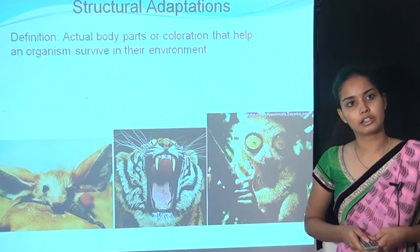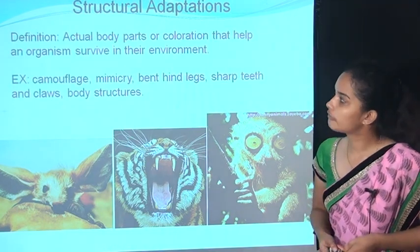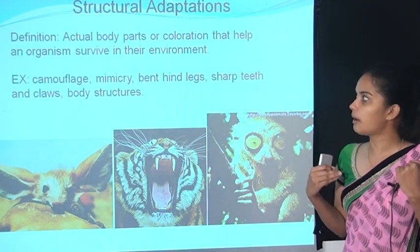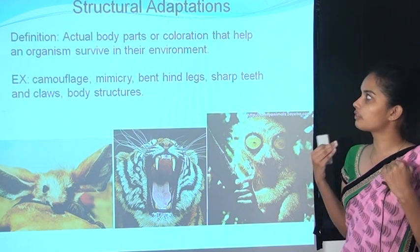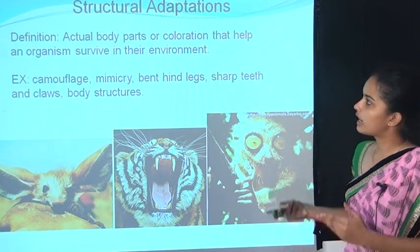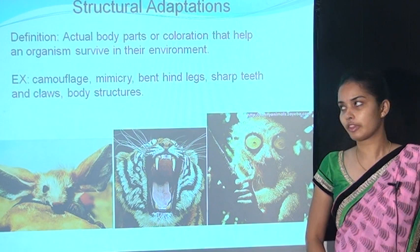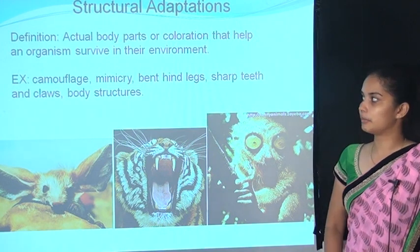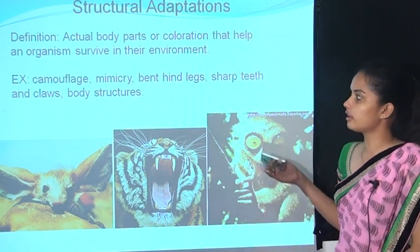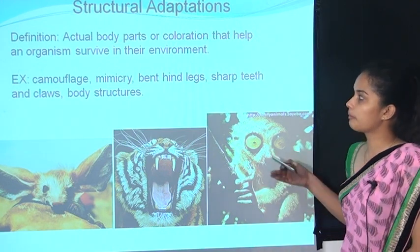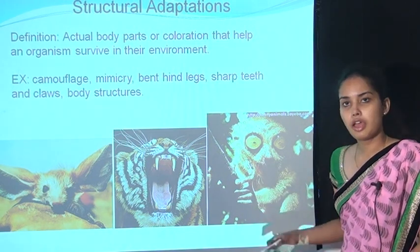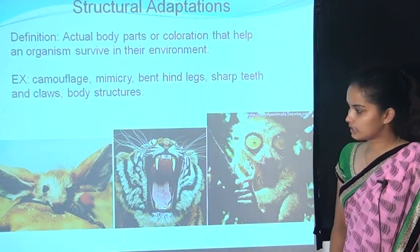First of all, structural adaptation. The definition is: the actual body part or the colouration of an animal or organism that helps it to survive in its environment. Examples include camouflage (colouration), mimicry, bent hind limbs, sharp teeth and claws, and body structures.